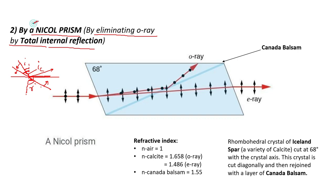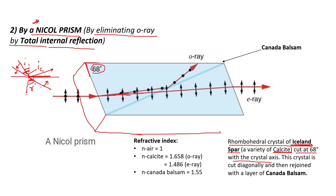Now let's see what the Nicol Prism is. It is a rhombohedral crystal of Iceland Spar cut at 68 degrees with the crystal axis. You can see here the 68 degrees — it is actually a 3D rhombohedral crystal, but here we are only showing the plane along which the two rays are traveling.